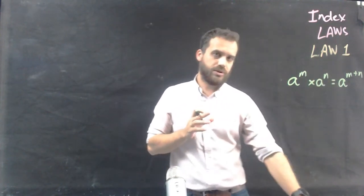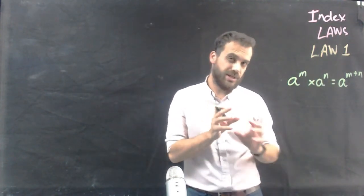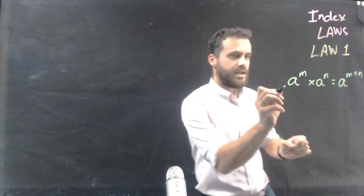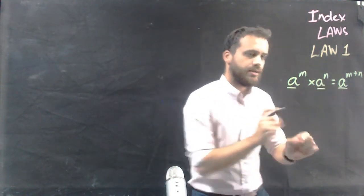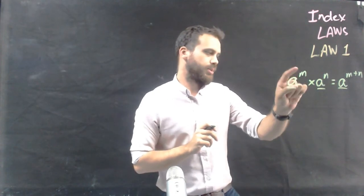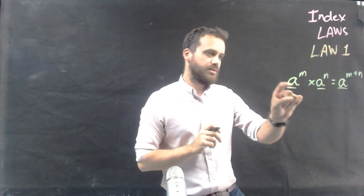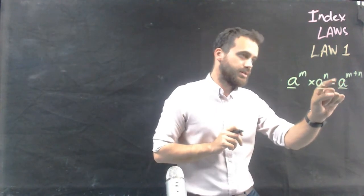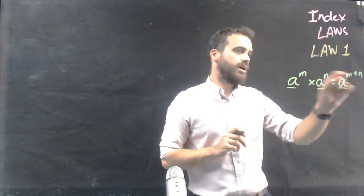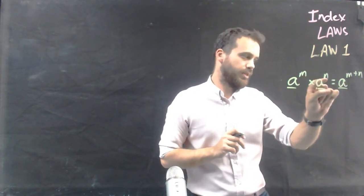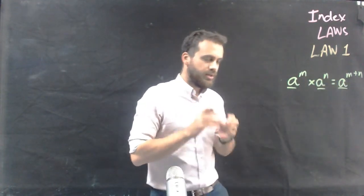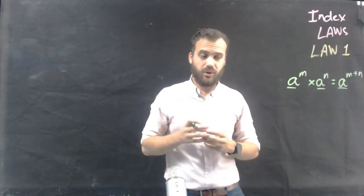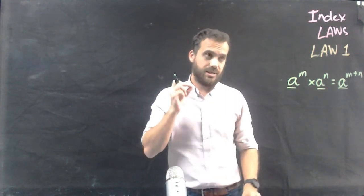Now there are a couple of important things to note here when it comes to index laws. The first is that the base to the power of something times the same base to the power of something is equal to the same base to the power of that plus that. The important part is that the base — the number or letter at the bottom — has to be the same.